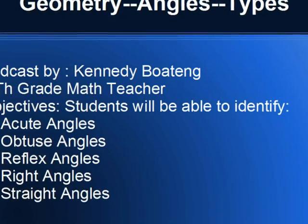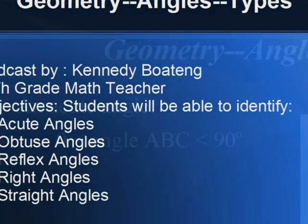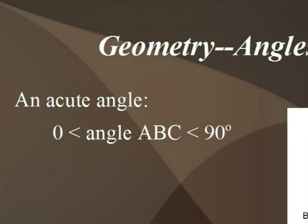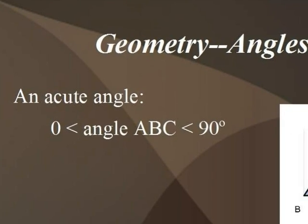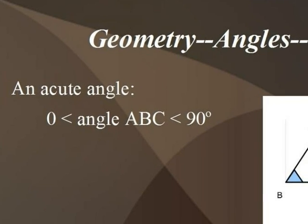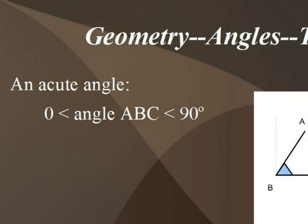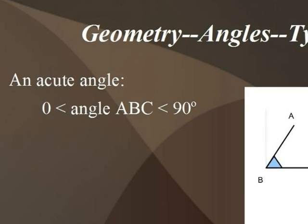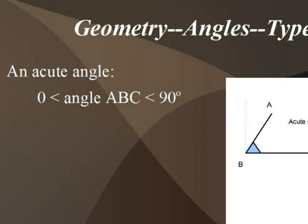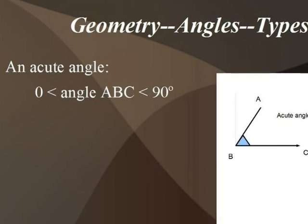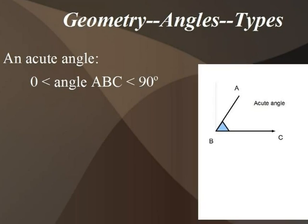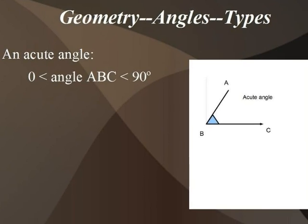Let's get ready and roll, class. We begin with an acute angle. An acute angle is an angle that is greater than zero but less than 90 degrees. As we can see in the picture, we have two lines meeting at an angle which is less than 90 degrees.